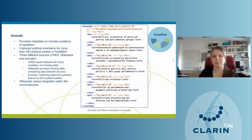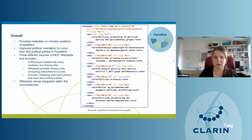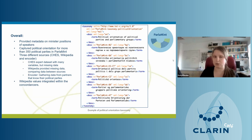Overall, we provided metadata on ministerial positions of individual speakers and captured political orientation for more than 350 political parties in ParlaMint using three sources. CHES represented an expert dataset with valuable and accurate data but had missing data, remedied by Wikipedia which also enabled cross-source comparison. The encoder option gathered data from partners who know their political bodies. The entire dataset is available in different formats; the Wikipedia values are also integrated within the concordancers to enable further analysis.